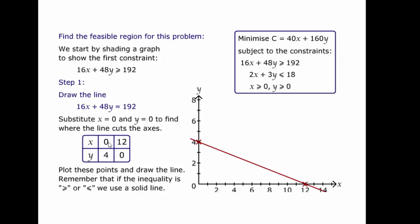So we can see here when x is zero, 48y is 192. So y is 4, because 4 times 48 is 192. When y is zero, 16x is 192. Well, 192 divided by 16 is 12. So x is 12. And then we draw the straight line between those two points.